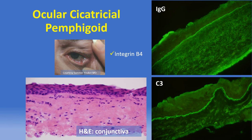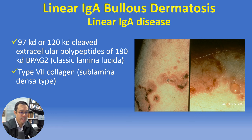In ocular cicatricial pemphigoid, the DIF findings are the same but a variety of different antigen targets have been identified including alpha-6 beta-4 integrin. Linear IgA bullous dermatosis is a subepidermal blistering disorder associated with prominent neutrophils; clinically it can be distinctive with an annular arrangement of vesiculobullous lesions — the so-called crown of jewels — and is mediated in the classic lamina lucida variant by autoantibodies targeting fragments of the minor bullous pemphigoid antigen BP180 (BP antigen 2). Vancomycin is a classic drug trigger.